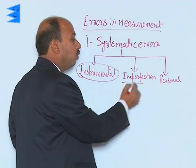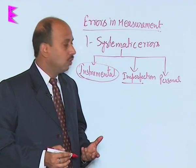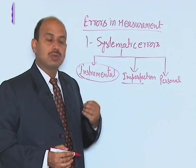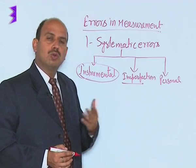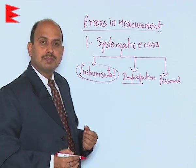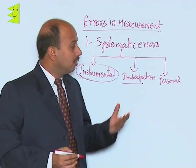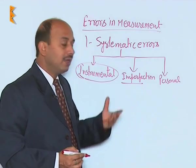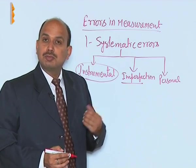Imperfection error occurs when you do not know how to measure — you are using a wrong technique, not knowing the proper method, or not placing the instrument correctly. All of these are called errors due to imperfection when you do not know the procedure of measurement properly.